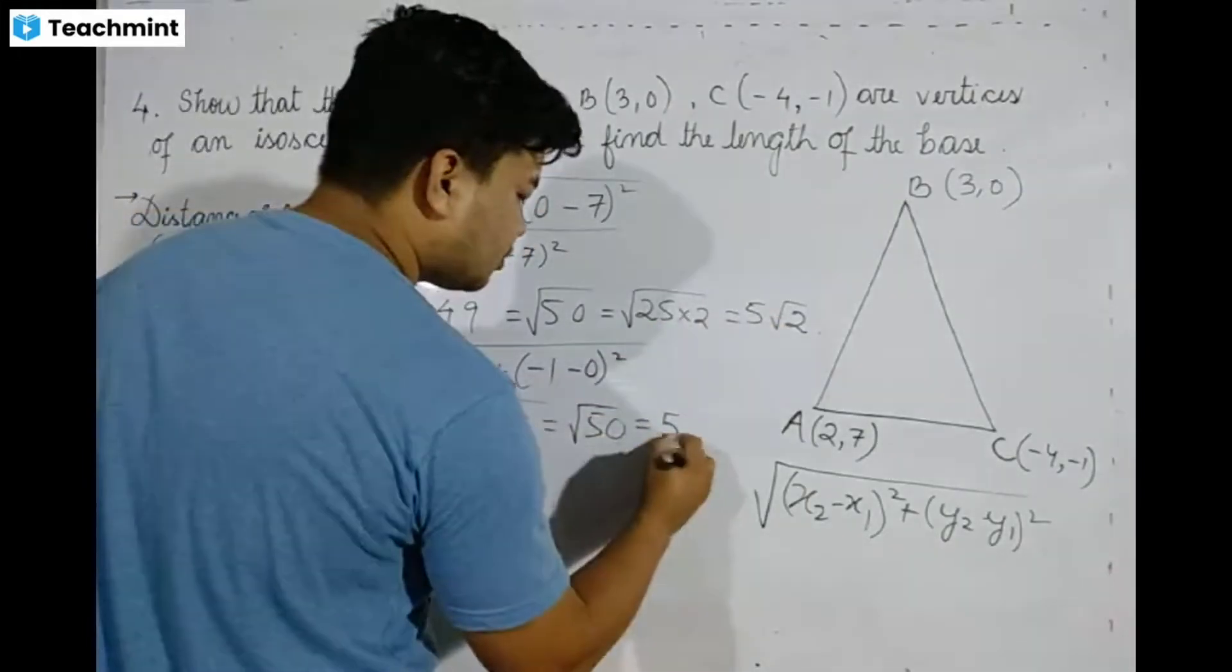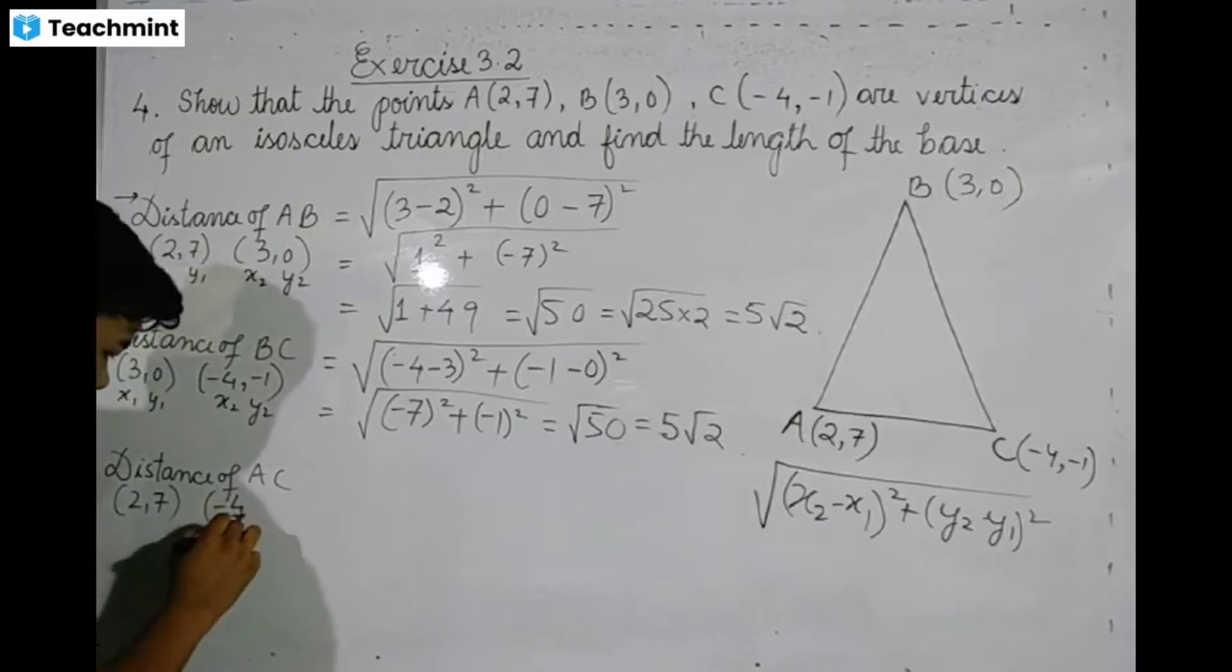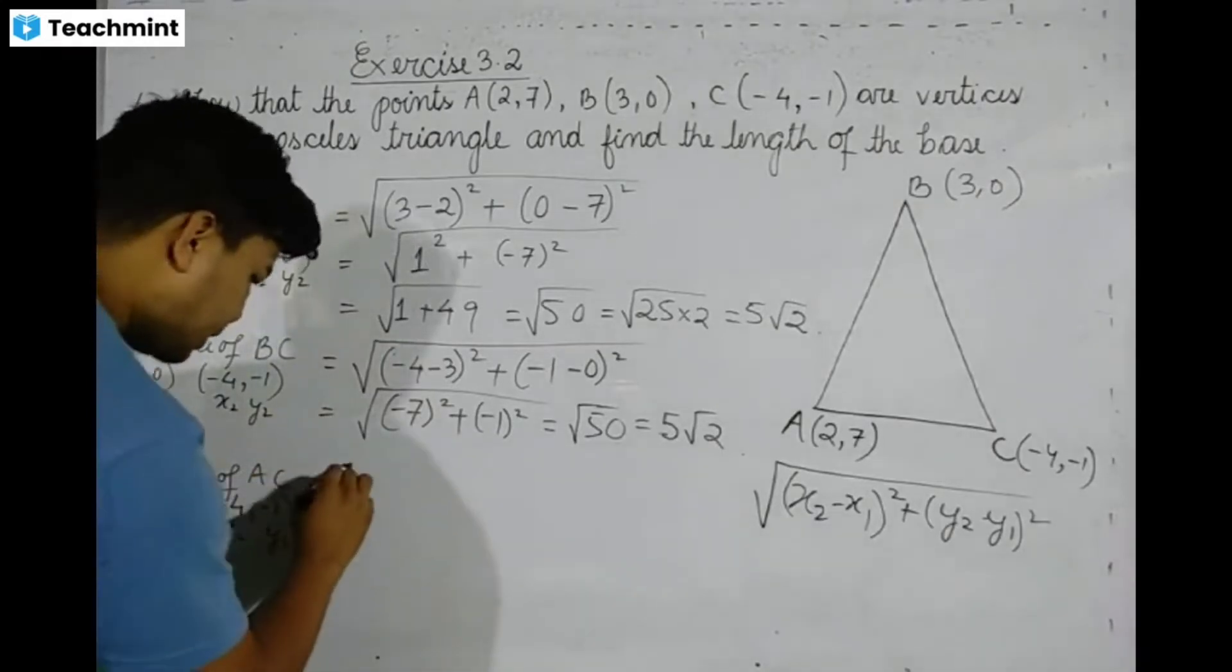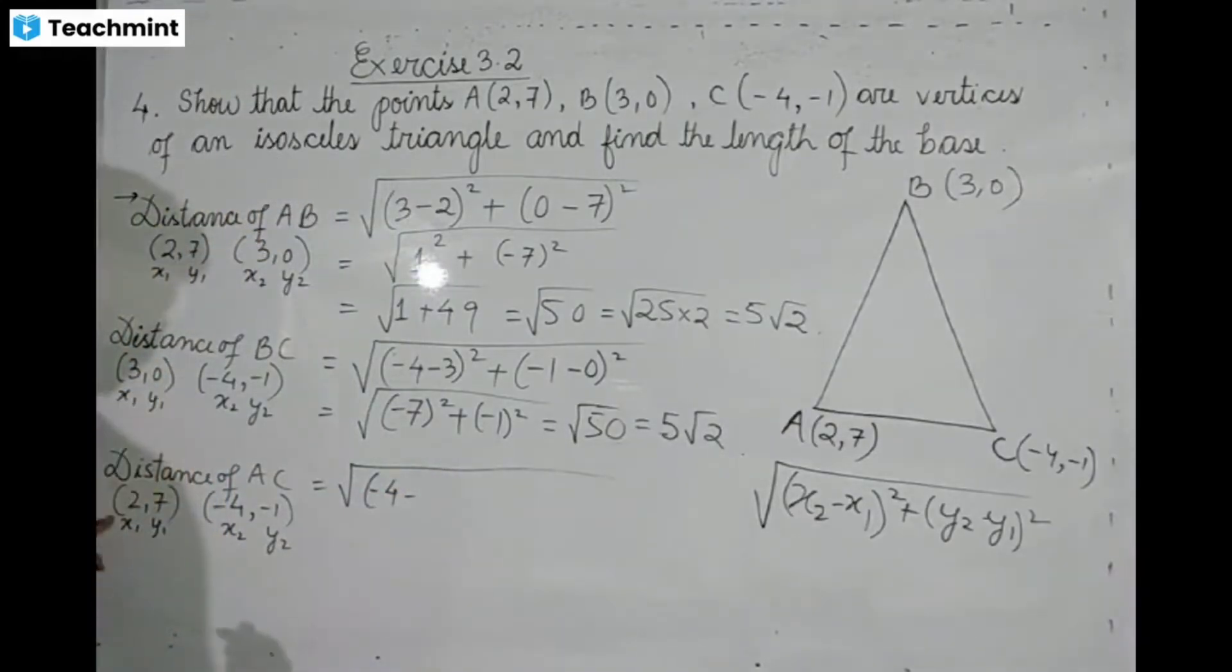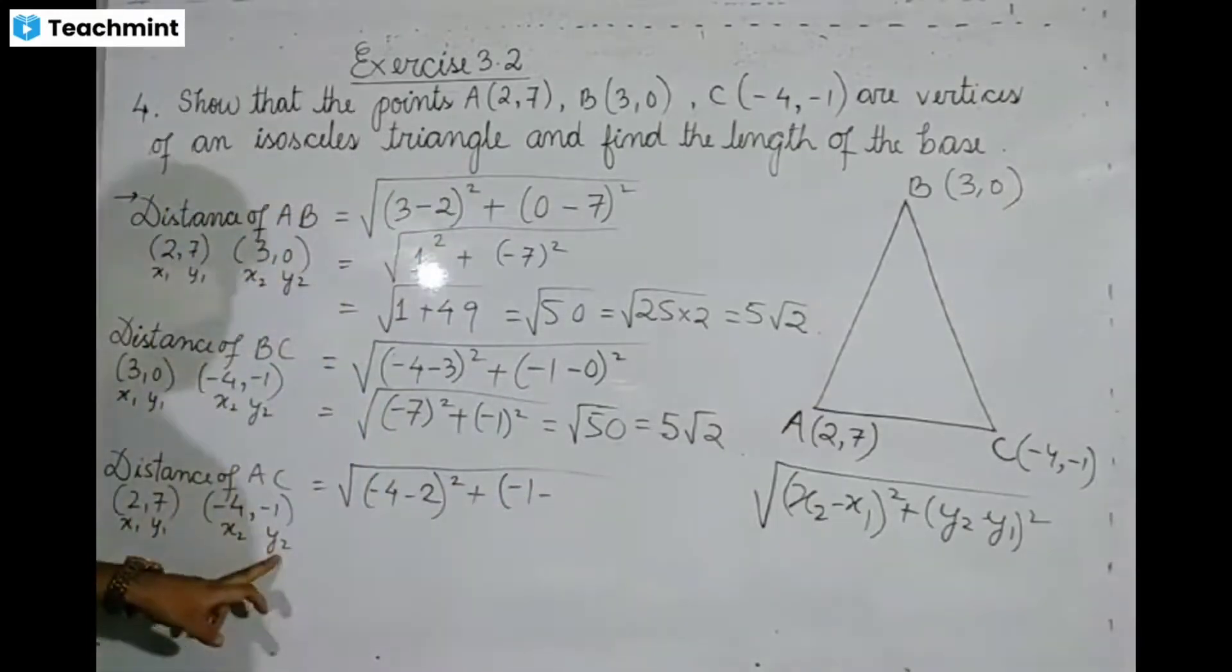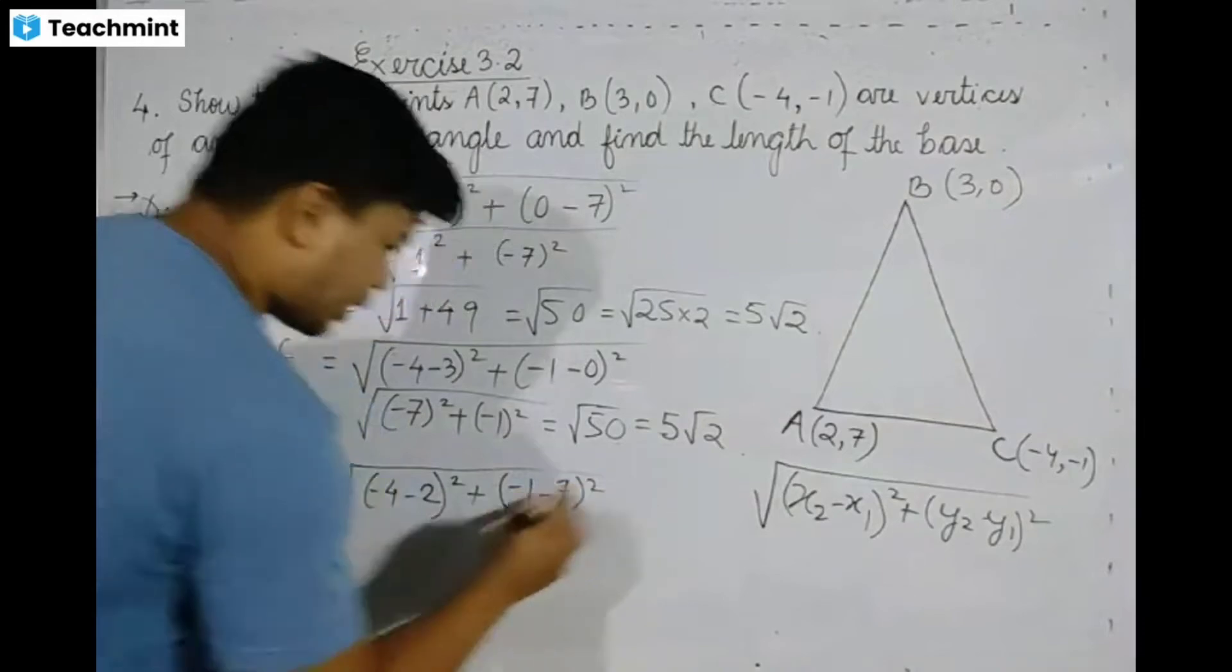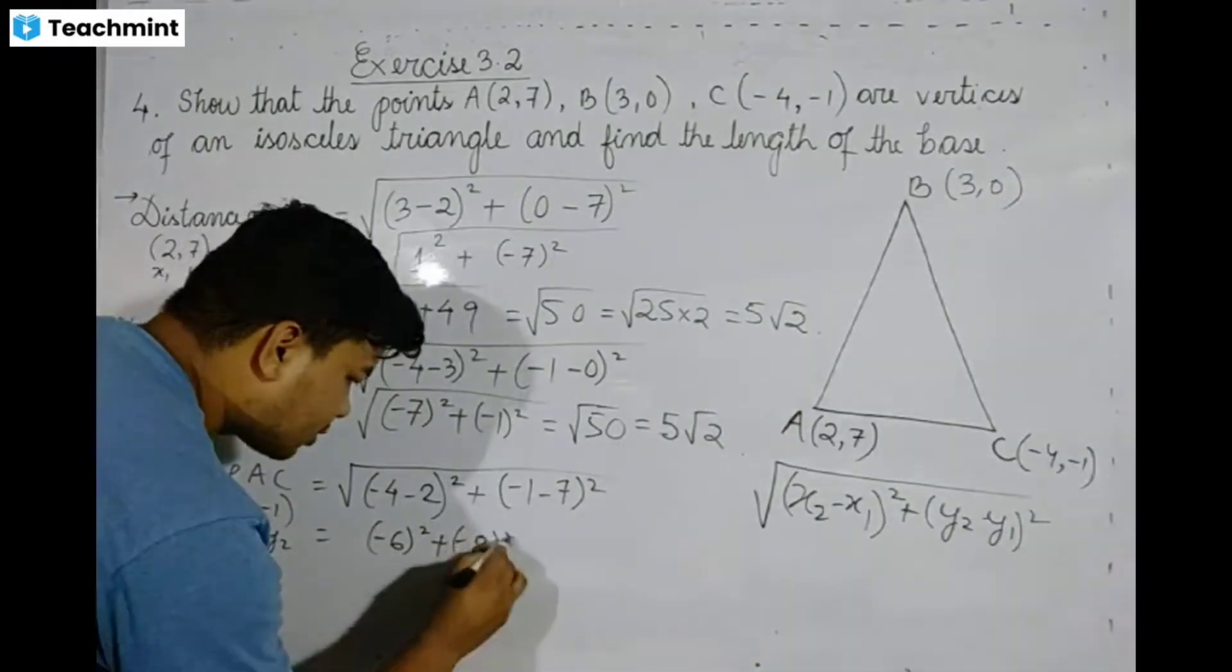Now distance of AC. A's coordinates are (2,7) and C's coordinates are (-4,-1). So we have square root of (-4 - 2)² plus (-1 - 7)². This equals (-6)² plus (-8)² = 36 plus 64.